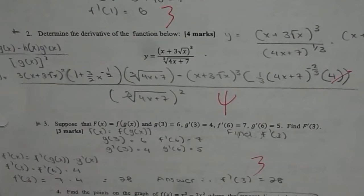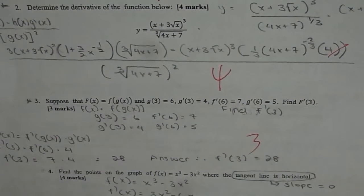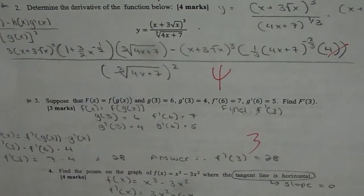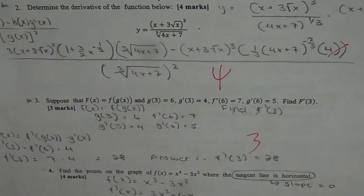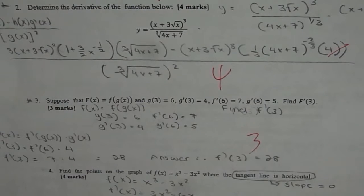And then last question on this page is find the point on the graph f of x equals to x cube minus 3 x square where the tangent line is horizontal. That is the slope should be 0, right?